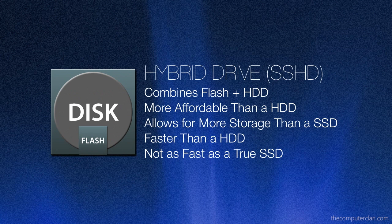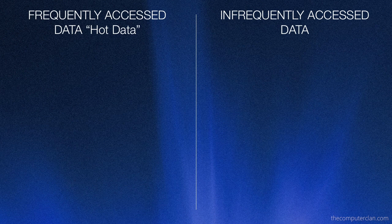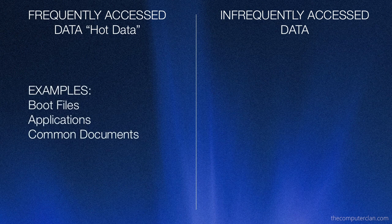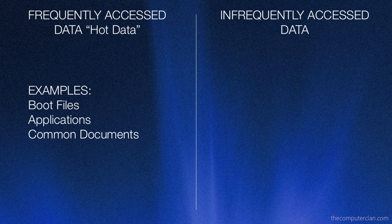Now, how exactly does it know what data goes on flash and what data goes on the disk? There are two types of data I would like to talk about: frequently accessed data, sometimes referred to as hot data, and infrequently accessed data. Some examples of hot data are boot files, applications, and common documents. Things that the system and the user need to use frequently are stored on the flash, so they load faster.